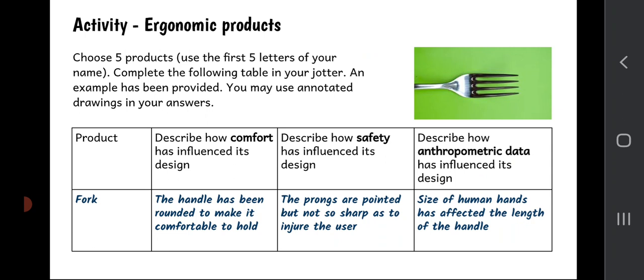So I want you to have a go as well. I want you to pick the first five letters of your name, and if you can't think of a product from those letters, then pick another letter, pick a product that does. But I want five products and I want you to complete a table like this for each product. Pause the video now and have a go at that.